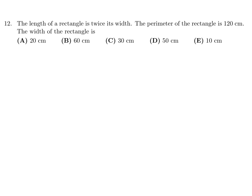The length of a rectangle is twice its width. The perimeter of the rectangle is 120. What is the width? Let's draw a rectangle with sides X and 2X — length is twice the width. The perimeter would be X + 2X + X + 2X, which adds up to 6X, and they're saying that equals 120.